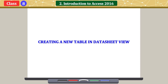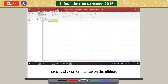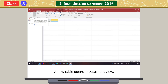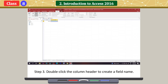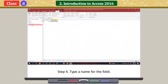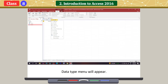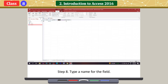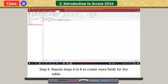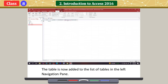Creating a new table in Datasheet View: Click on the Create tab on the ribbon, then click the Table button. A new table opens in Datasheet View. Double-click the column header to create a field name. Type a name for the field and press Enter. Click on the next column — a data type menu will appear. Select the data type for the field and type a name. Repeat these steps to create more fields. The table is now added to the list of tables in the left navigation pane.